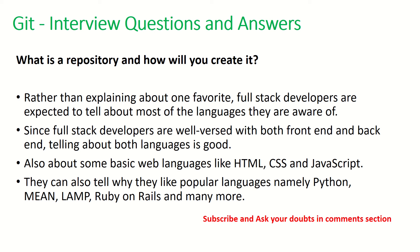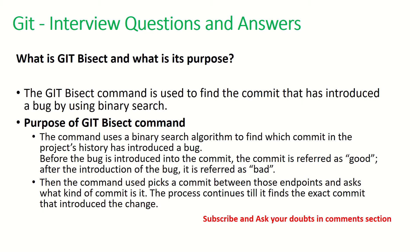How do you create a repository? Most of the time this is done by your admins, but if asked, you can always go into Stash and create a repository. What is git bisect and what is its purpose? The git bisect command is used to find the commit that has introduced a bug by using binary search. Before the bug is introduced the commit is referred to as a good commit, and after the bug's introduction the particular commit is called a bad commit. We use git bisect to figure out how and where the bug was introduced.